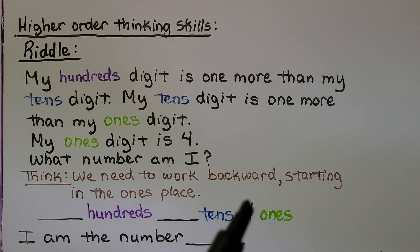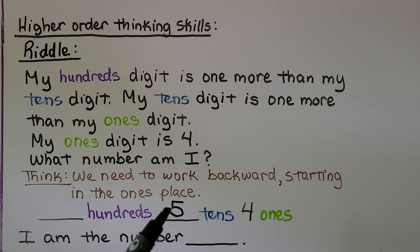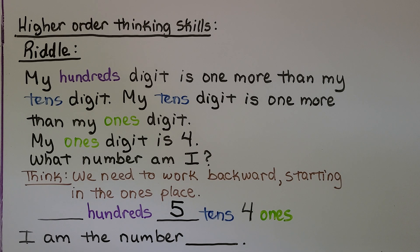The ones digit is four; one more than four is five, so the tens place must be a five. The hundreds digit is one more than the tens digit; one more than five is six, so the hundreds place must be a six. If you said 654, you're right!